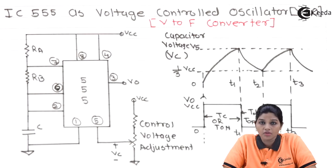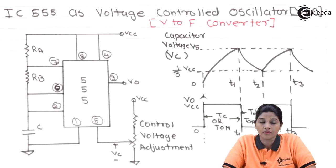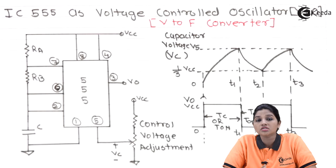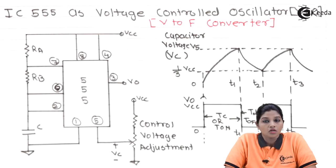This charging causes the capacitor voltage to rise to two-thirds Vcc. In the normal astable multivibrator, pin number 5 — the control voltage pin — is connected to an external capacitor of 0.01 microfarad. This capacitor avoids any false output at the output pin of timer IC 555. So in the normal astable multivibrator circuit, the control voltage has a fixed value equal to two-thirds Vcc.